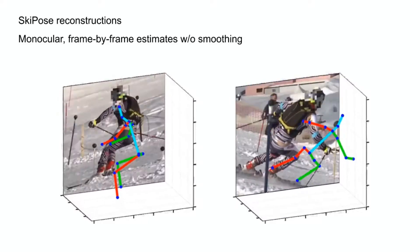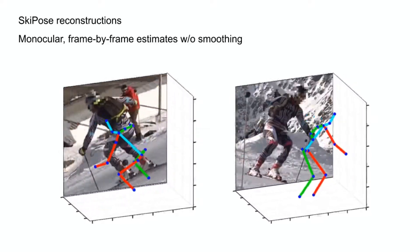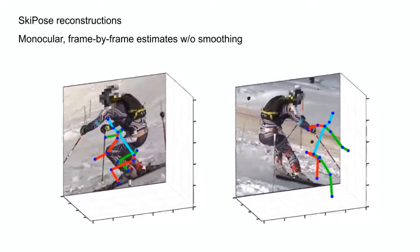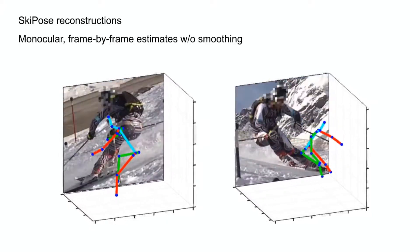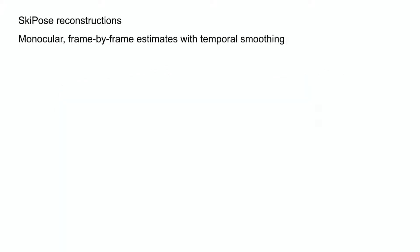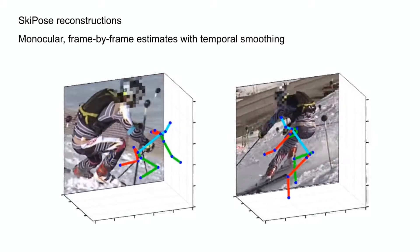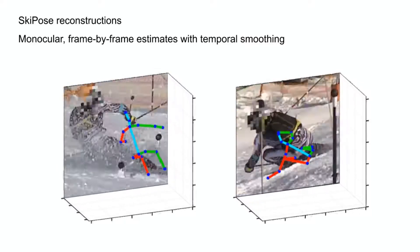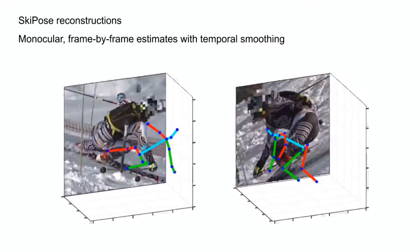First, without any temporal information. Next, we apply a simple Gaussian smoothing to the predicted single image reconstructions, which leads to nice and smooth motions.